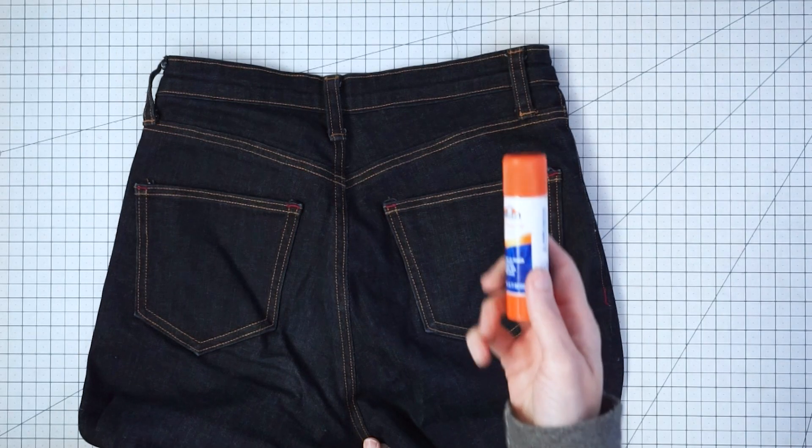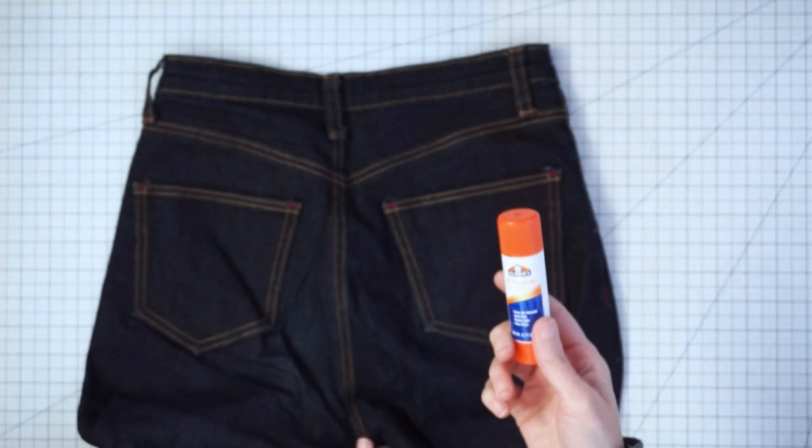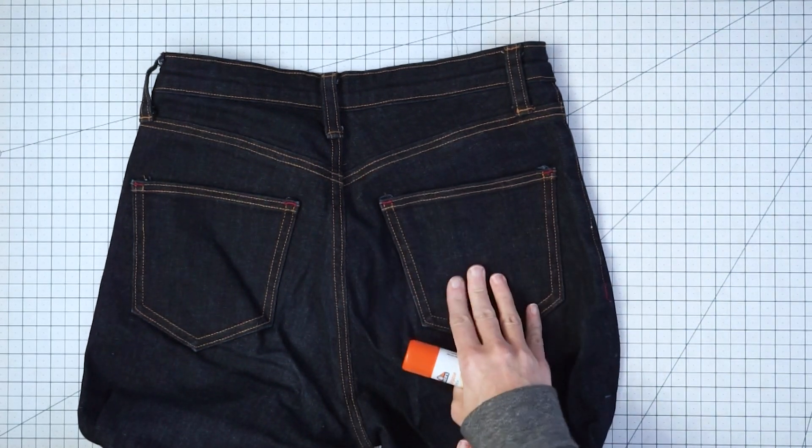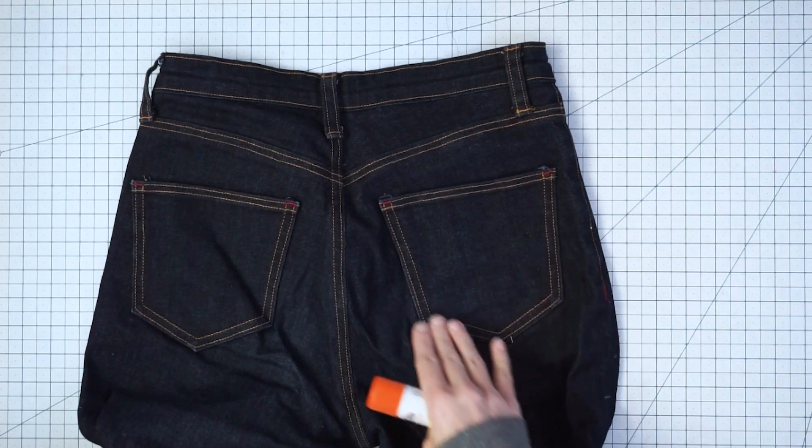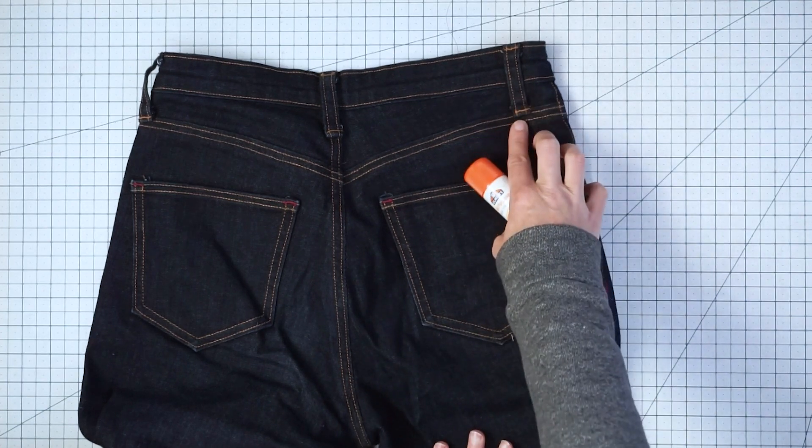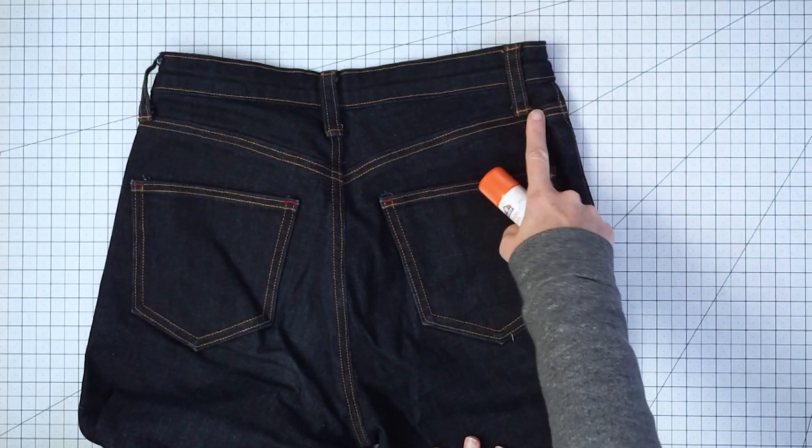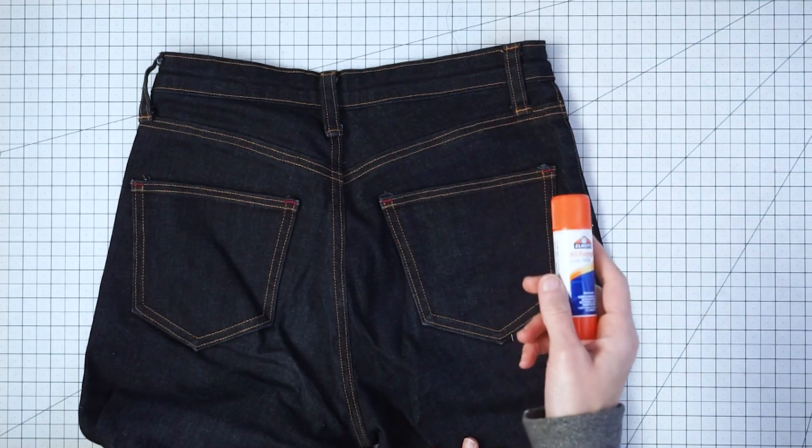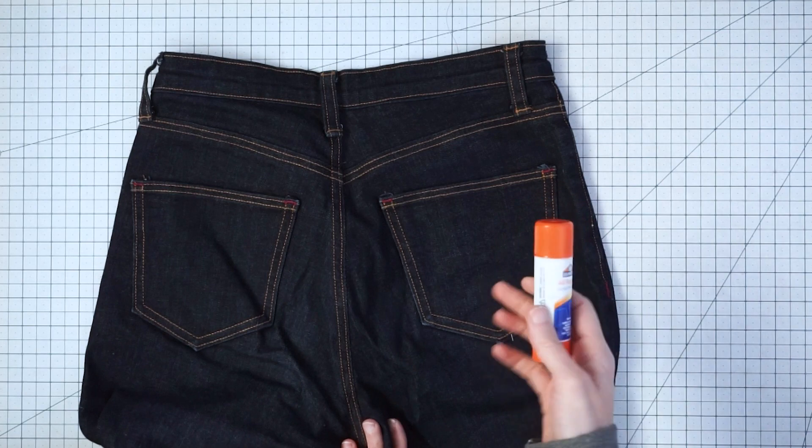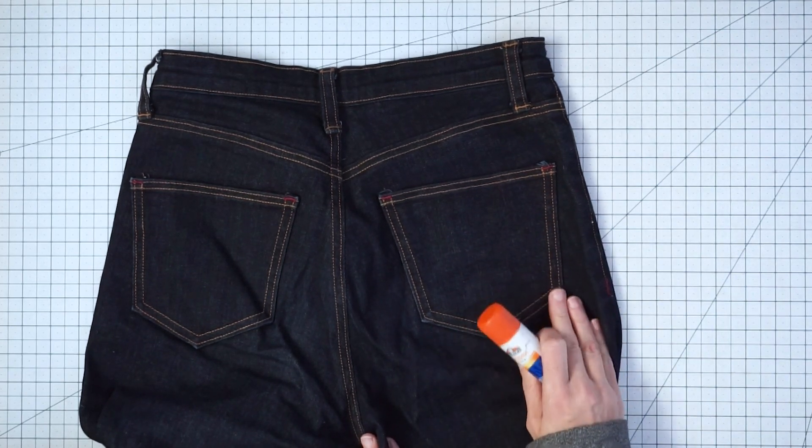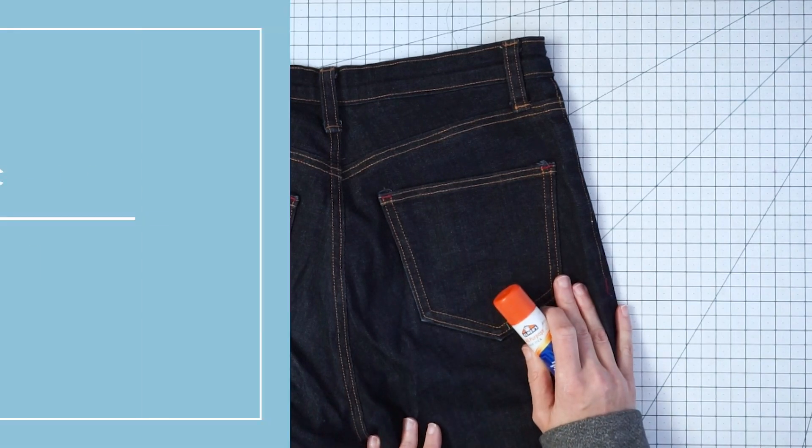One more thing that's really helpful to have is a glue stick. I like to use my glue stick to put on my pockets before I stitch them down—it'll just hold them in place. And to put on the belt loops, you can just put a little bit of glue on the wrong side and glue it down before you topstitch. I've never had any problems with the glue gumming up my machine. You just use enough to tack it down. It's a loose hold and will wash away later.